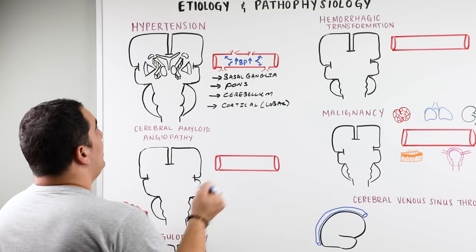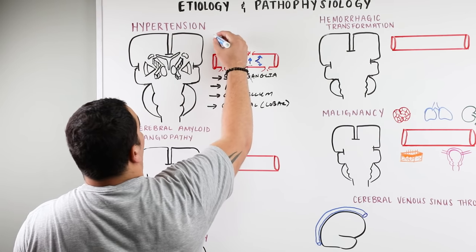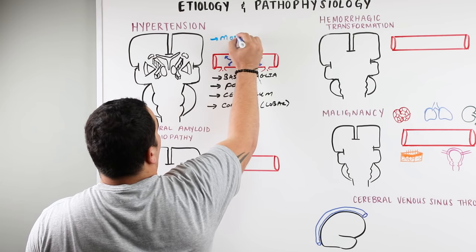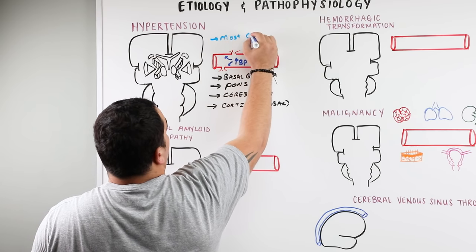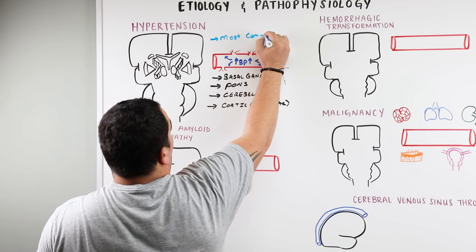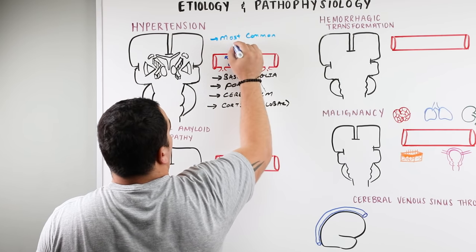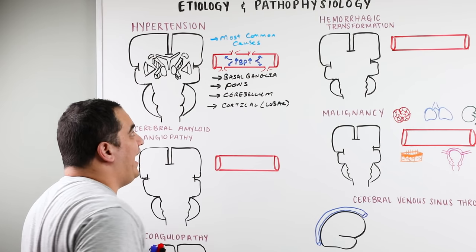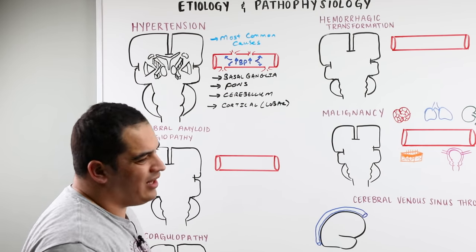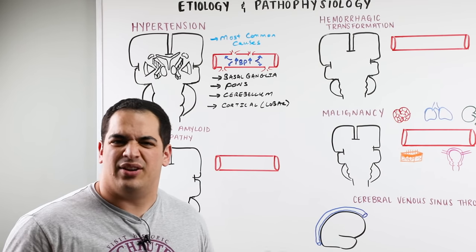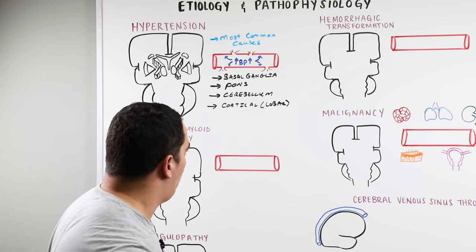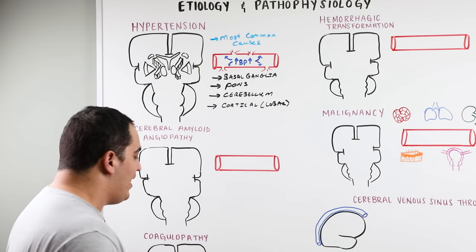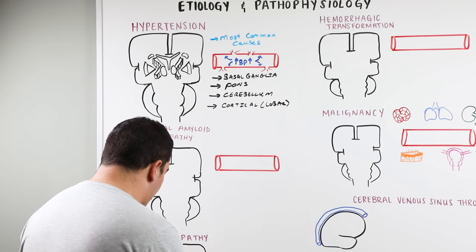Hypertension is by far the most common cause of ICH, and patients are usually less than 60 years of age.